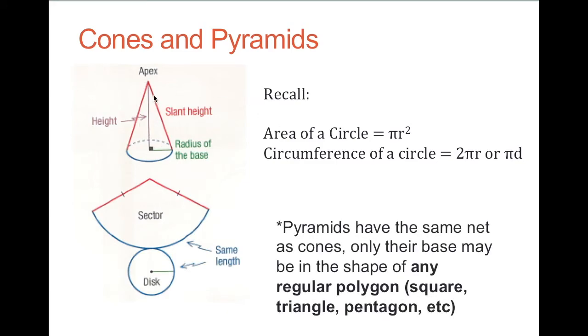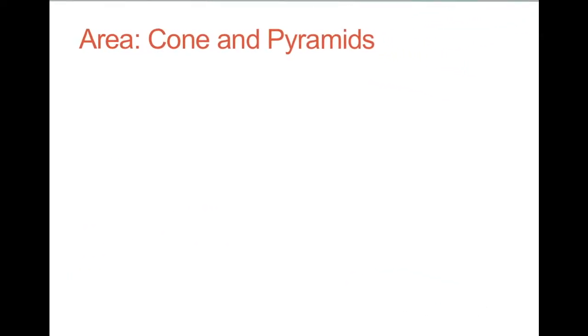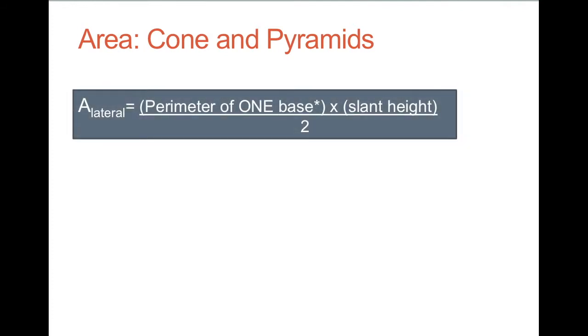Pyramids have the same net, meaning they have a slant height and a height, but their base is never a circle. It can be in the shape of any regular polygon. Most often it's a square, but sometimes you'll see pyramids with triangular bases, pentagonal bases, even hexagonal bases.